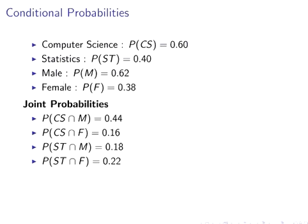So 60 students out of 100 are studying computer science, so we might say the probability of CS is 0.60. Likewise, the probability of ST is 0.40. Probability of M, probability of male, 0.62. And probability of female, 0.38.